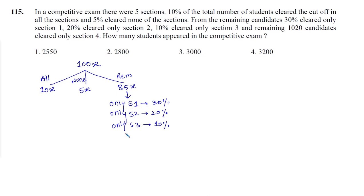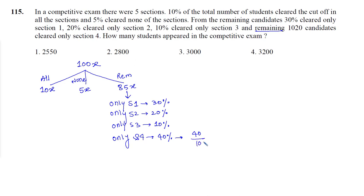Listen carefully. The remaining means how many percentages? Let's have a look. 30 plus 20 plus 10 is 60%, and 100 minus 60% gives us 40%. So the remaining 40% of students cleared only section 4. This 40% of 85x is equal to 1020 students.